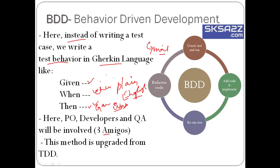Looking at the diagram, BDD and TDD diagrams look similar. The difference is that in BDD, the product owner, developers, and QA are all involved and give feedback on the product developed — so the product is always refined to a better requirement, and you get a better product in BDD.